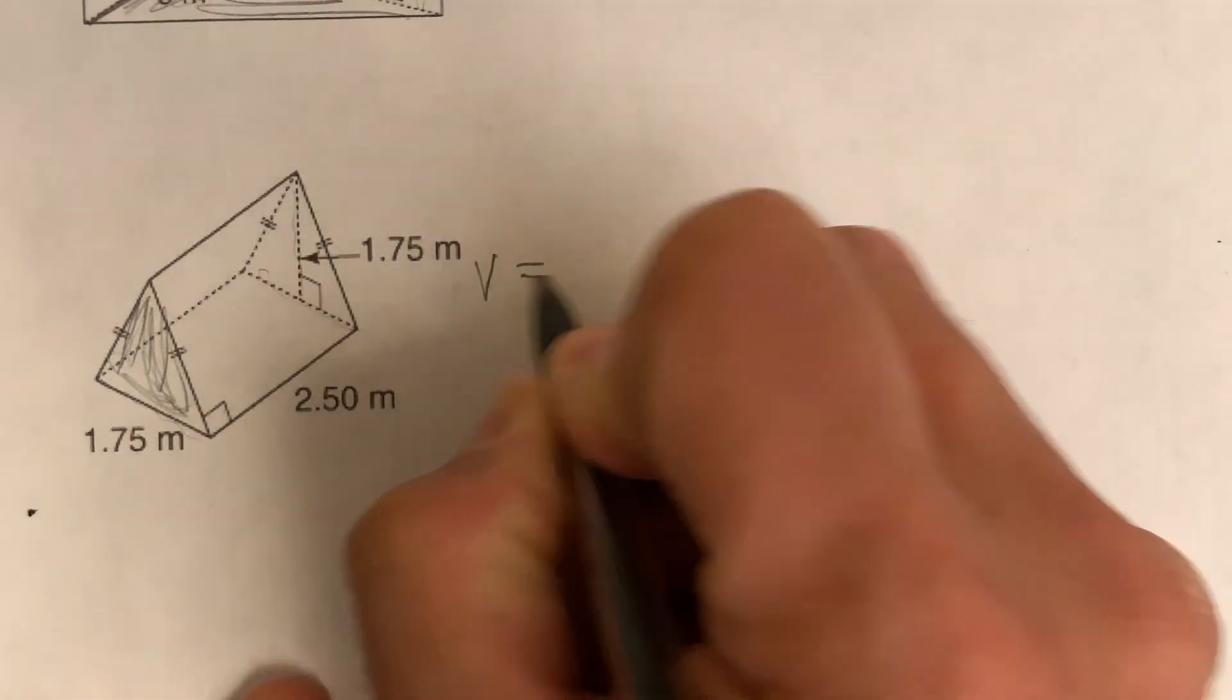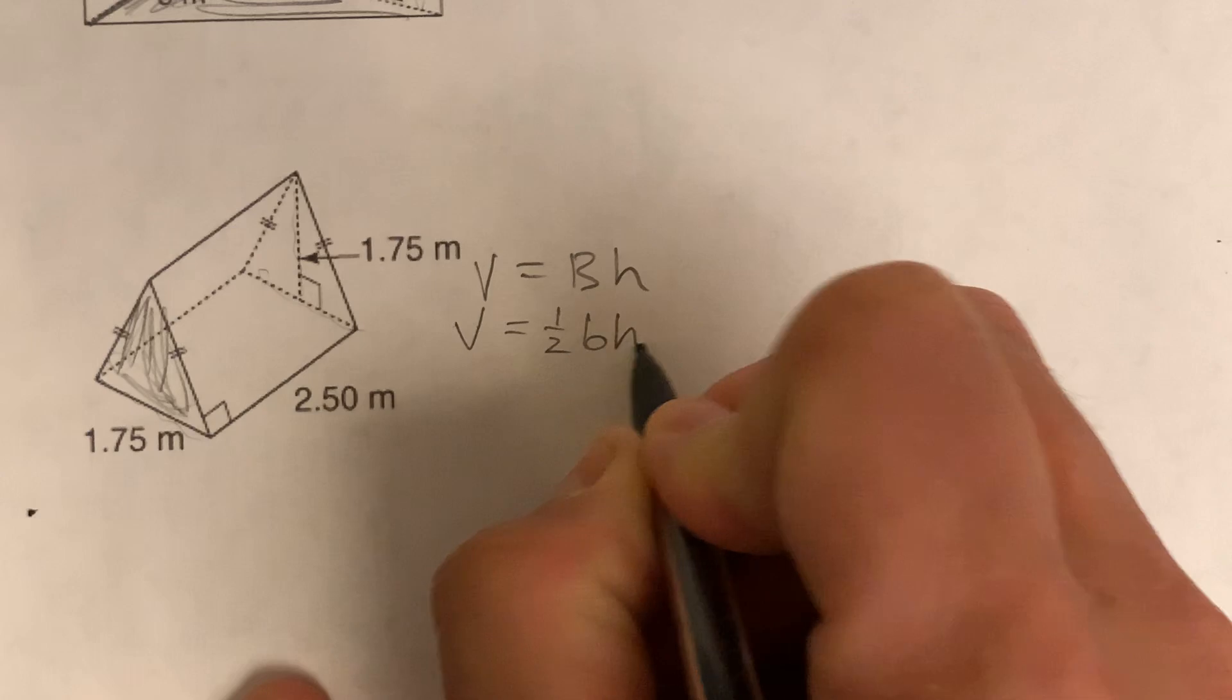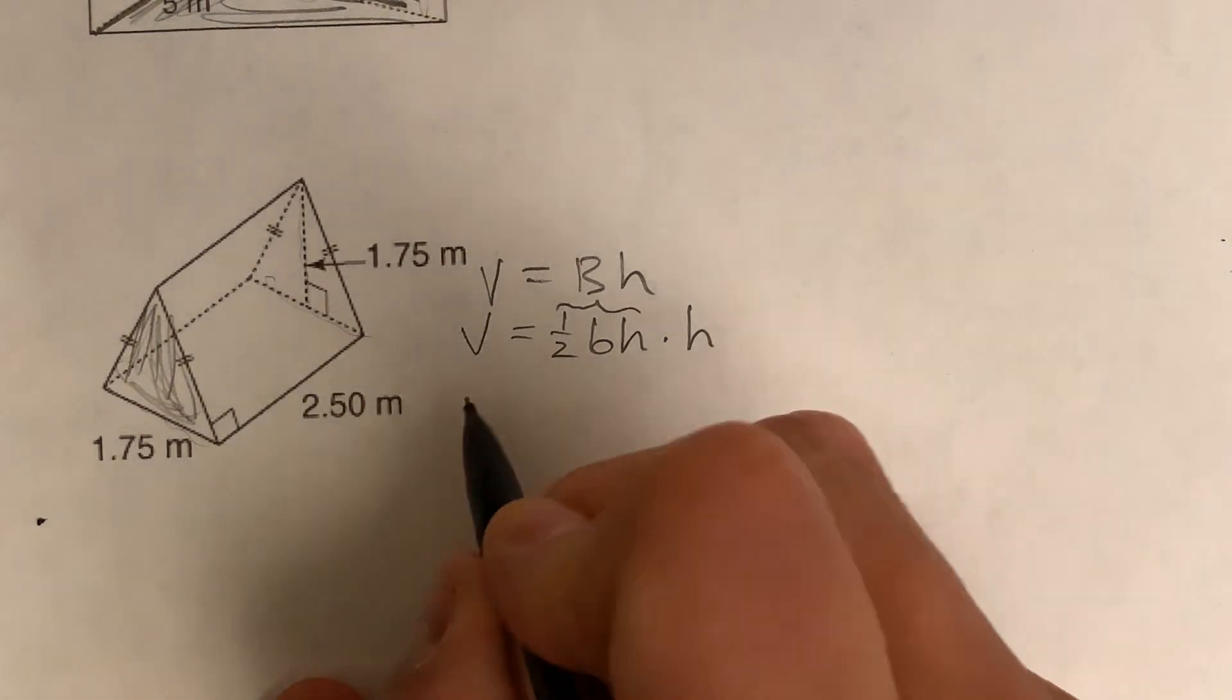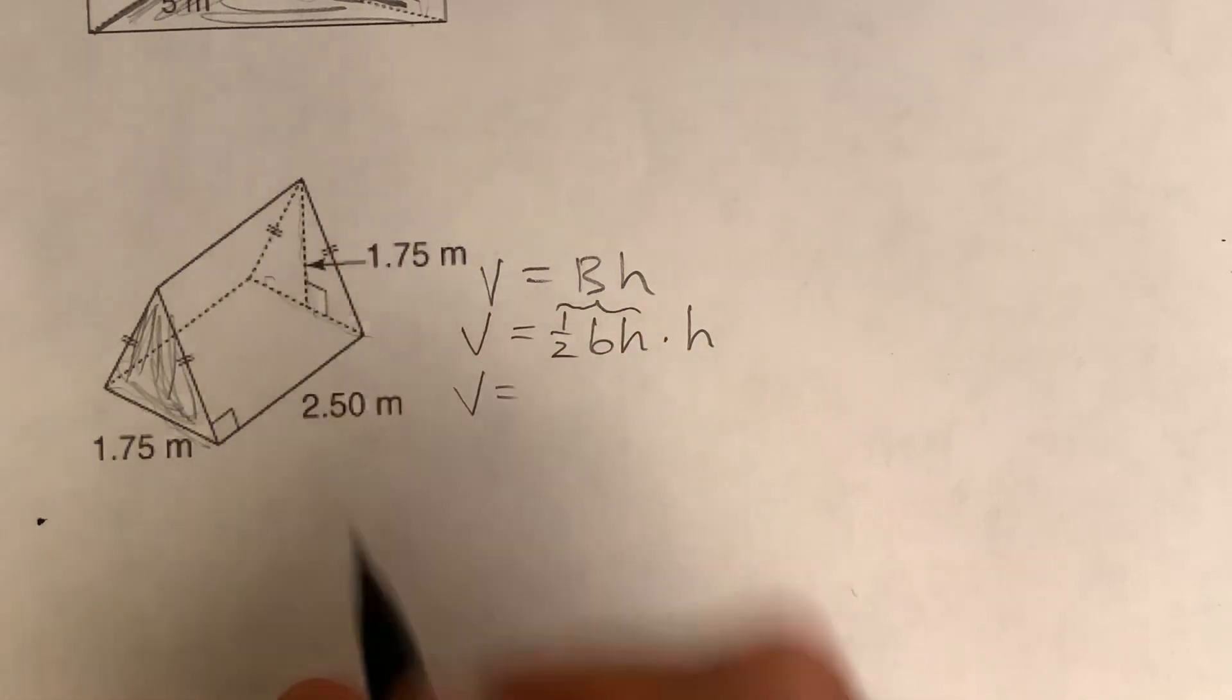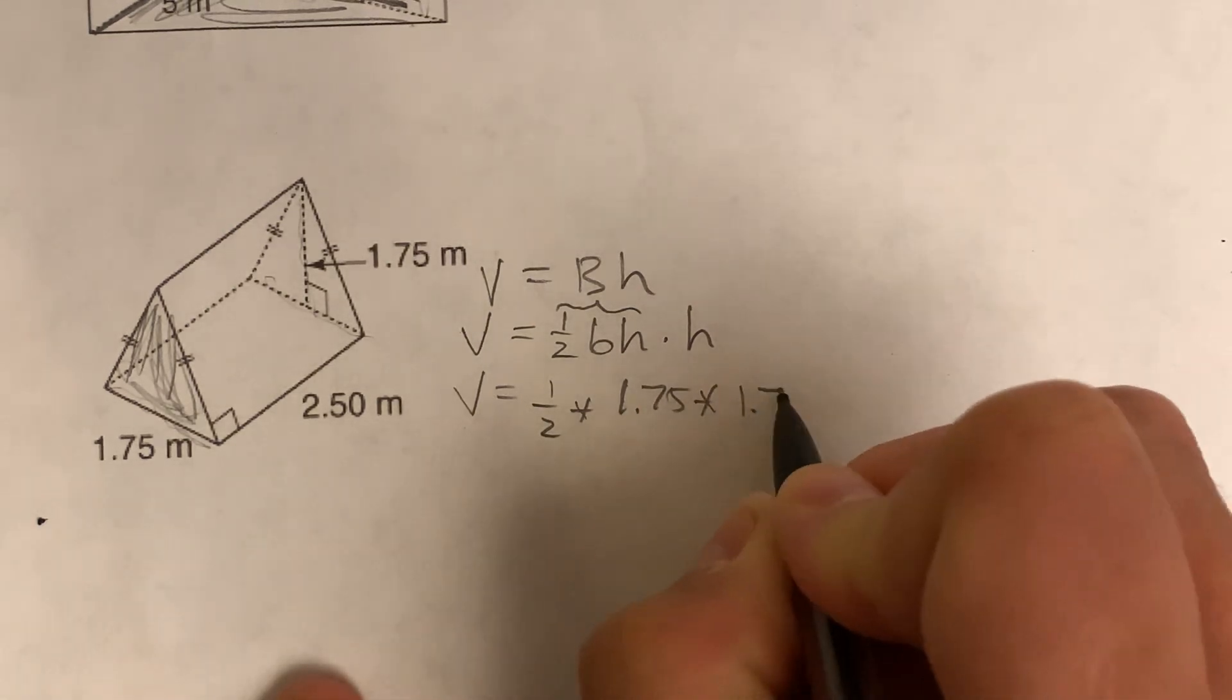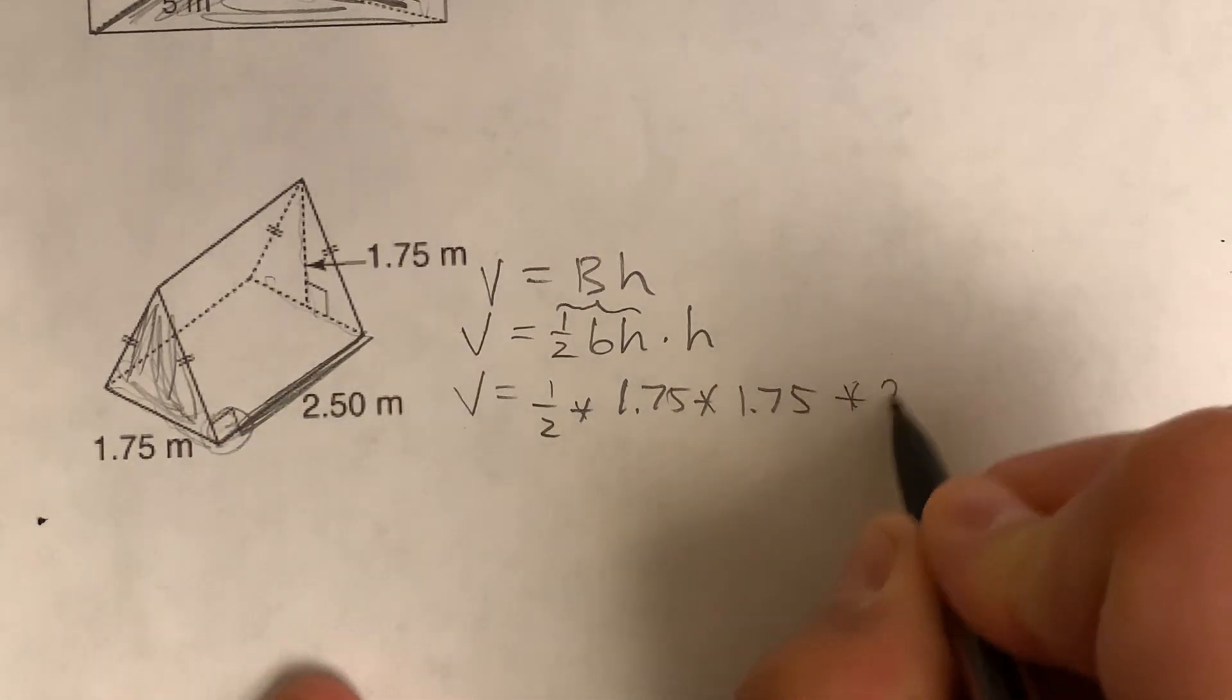So we're going to go with the volume equals base area times height. And again, you can pause at any time if I'm going too fast. Times height. Right in here is our base and height there. And then we're going to say the volume equals. Let's see half the triangle. So 1.75, 1.75. So 0.5 times 1.75 times 1.75. And then distance between the bases, notice it's at a right angle right here, is 2.5.